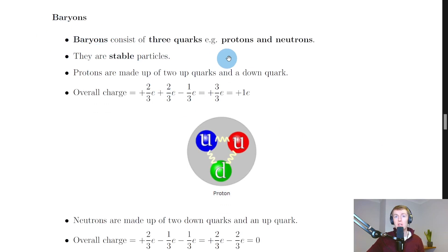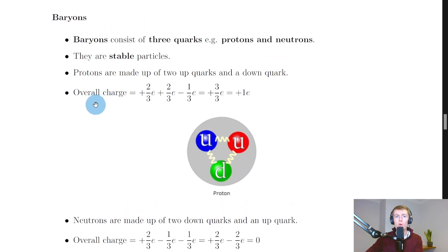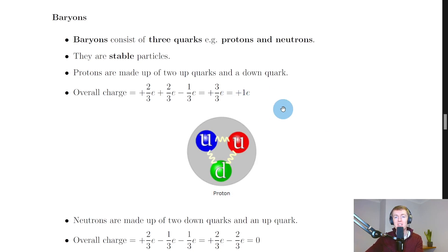Let's start by looking at baryons. Baryons consist of three quarks — for example, protons and neutrons. They are stable particles. Protons are made up of two up quarks and a down quark. So if we zoomed in on a proton, you would see two up quarks and a down quark all joined together by what we call gluons, which we'll cover in a future video on force-mediating particles. Knowing this, we can work out the overall charge on the proton and find that it's plus one e.